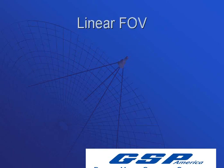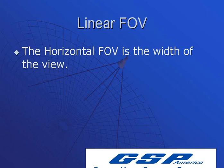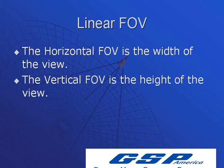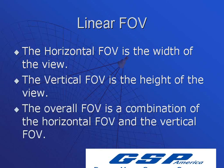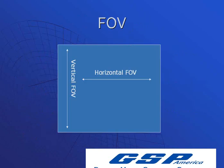We're going to talk about linear field of view — so feet and inches. The horizontal field of view is the width of the view. The vertical field of view is the height of the view. The overall field of view is a combination of horizontal and vertical. Sometimes it's even referred to as a diagonal field of view — just like you would measure your TV set from one corner to the other to get a diagonal measurement. So horizontal is the width of view, and vertical would be the height of view.